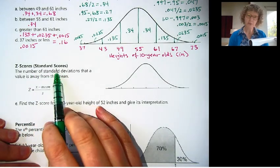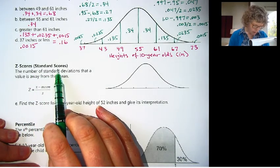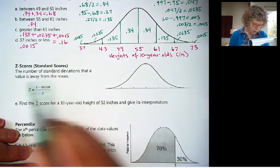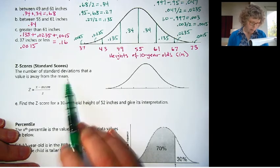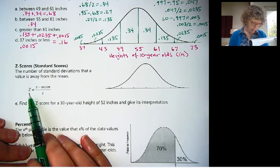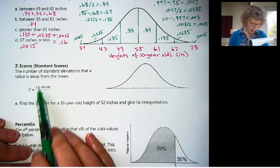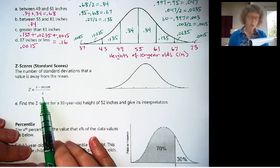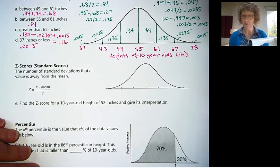Okay, so let's talk about z-scores, also sometimes called standard scores. What it is, it's the number of standard deviations that a value is away from the mean, and there's a formula for it. z is the x, which is the data value, minus the mean, over the standard deviation.